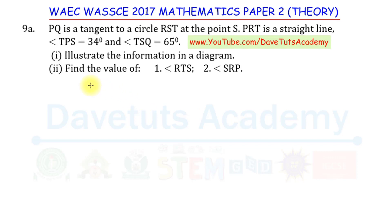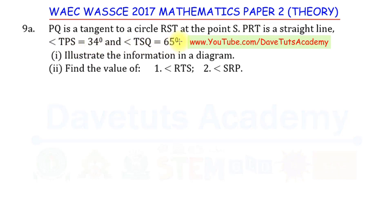Let's look at the question together. We are told that PQ is a tangent to a circle RST. First, you need to understand what a tangent to a circle is — a tangent is a straight line drawn to join a circle only at a single point on the circumference. We are also told that PRT is a straight line, angle TPS equals 34 degrees, and angle TSQ equals 65 degrees.